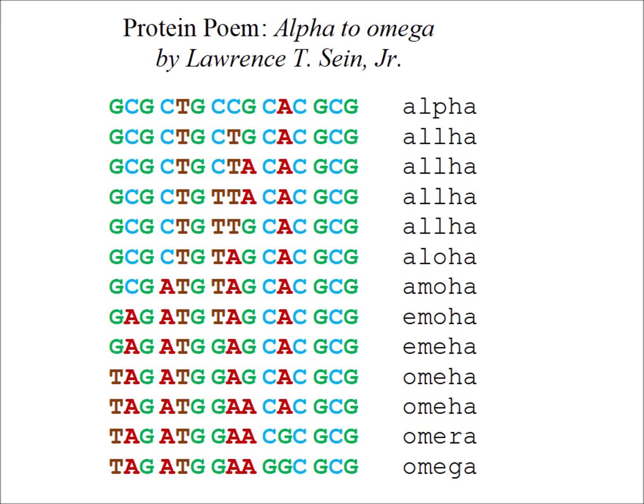Steps are only allowed if the protein on the right consists of legitimate words in the English language, from one letter up to as many letters as there are in coding. So, in poem number one, we evolve from alpha — the first letter of the Greek alphabet — to omega, the last letter of that alphabet.